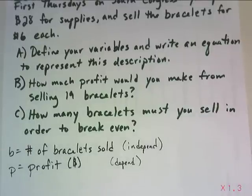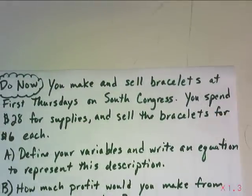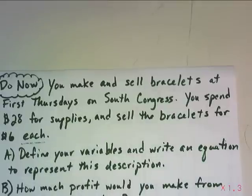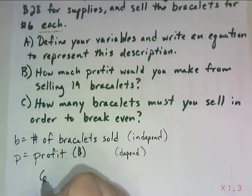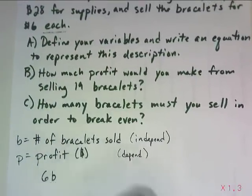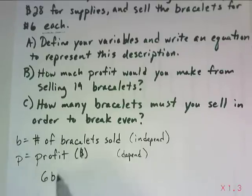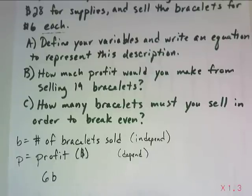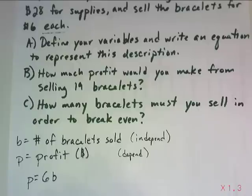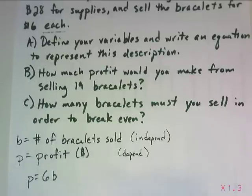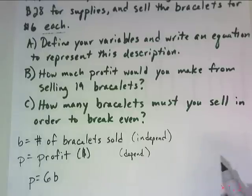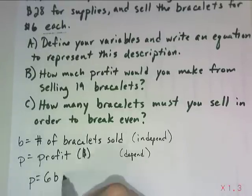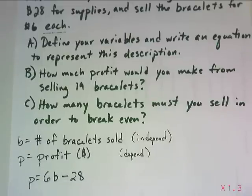We need to represent the relationship with an equation. I spend $28 for supplies and sell the bracelets for $6 each — that word 'each' is a big clue, it is our rate: $6 per bracelet. So $6 times the number of bracelets. This time I have p equals, not y equals. I still need my constant — but since b is already number of bracelets sold, I'll just refer to it as the constant. My profit is $6 times the bracelets, but I had to invest $28 in supplies, so I'm already down $28. The equation is p equals 6b minus 28.